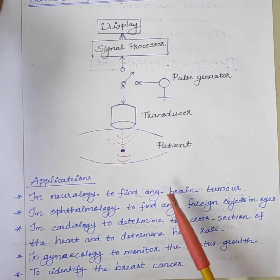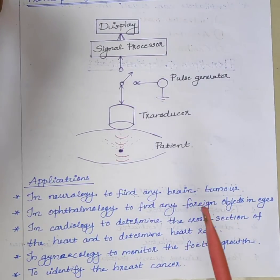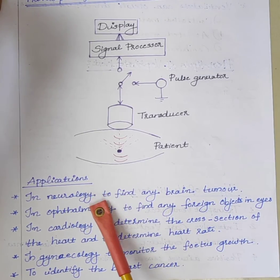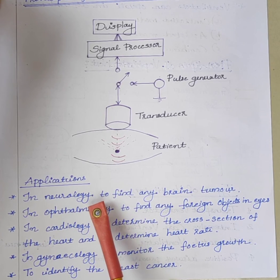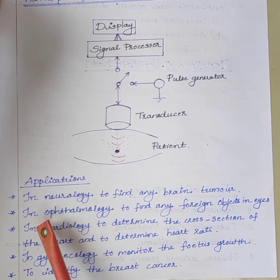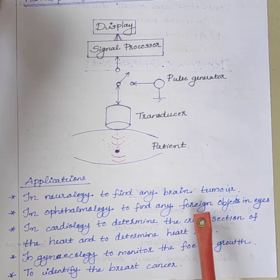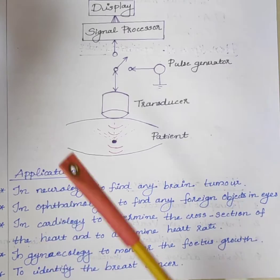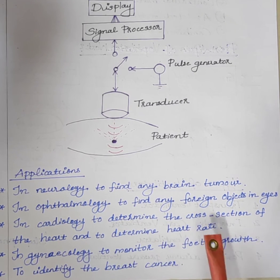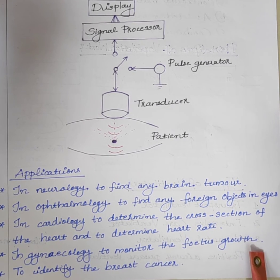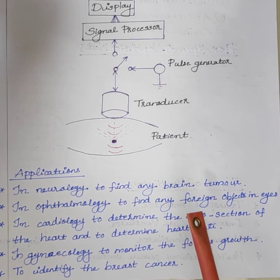This is the basic working principle of the ultrasound imaging system. The applications of ultrasound imaging include: in neurology, it is used to find brain tumors; in ophthalmology, to find foreign objects in the eyes; in cardiology, to determine the cross-section of the heart and to determine heart rate; in gynecology, it is used to monitor fetus growth; and it is also used to identify breast cancer. These are some of the applications of the ultrasonic imaging system.